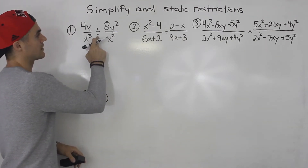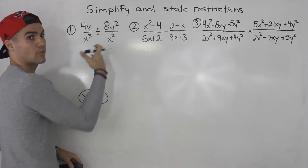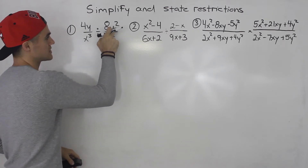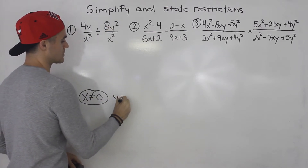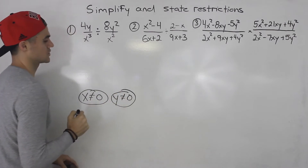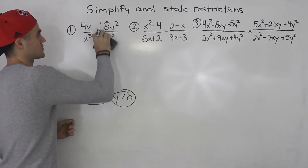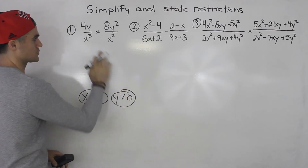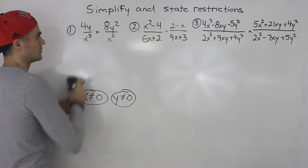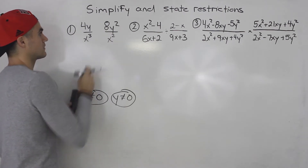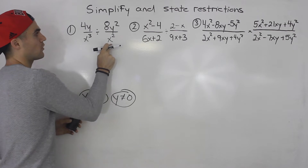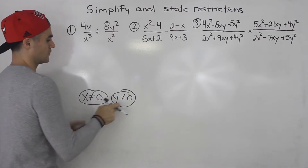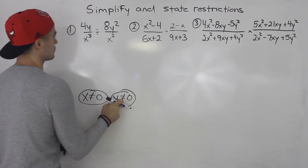But since we are dividing, we also have to look at the numerator of the rational expression that we are dividing by — I mentioned that in the previous video. So notice here y cannot equal zero; that is a restriction as well. If this was multiplying, that wouldn't be a restriction — it would just be the denominators, x cannot equal zero. But because we are dividing, you have to look at the denominators of both and the numerator of the rational expression you are dividing by. So those are the two restrictions.